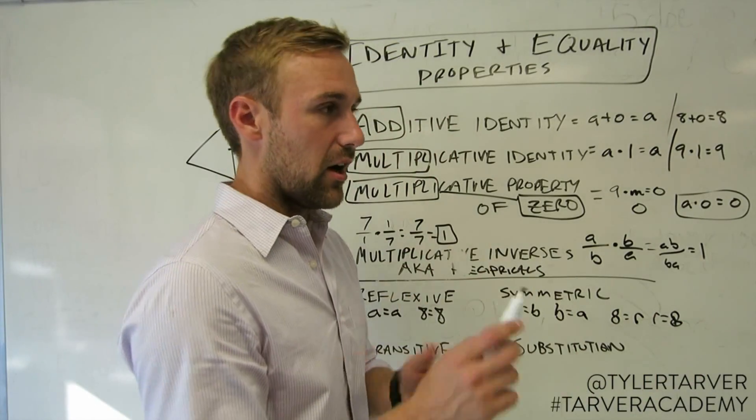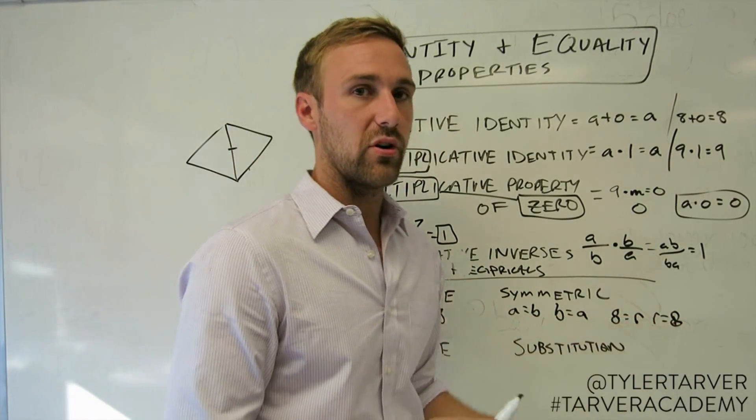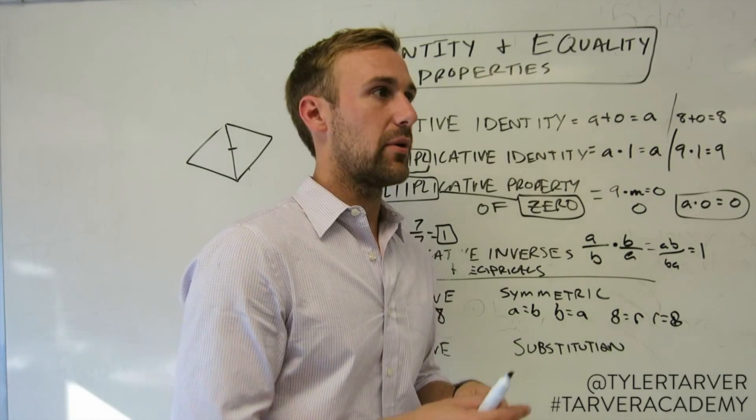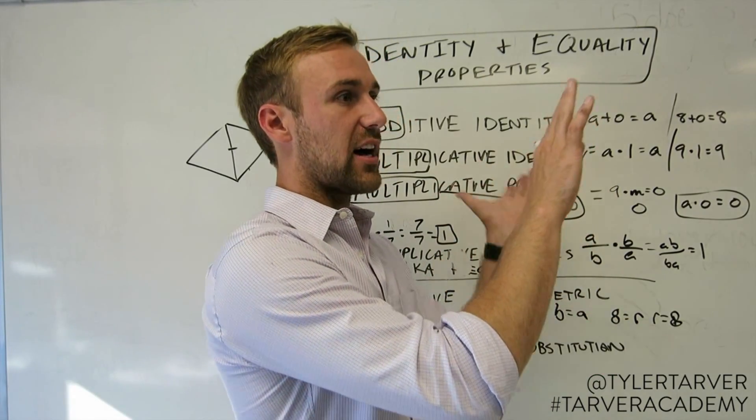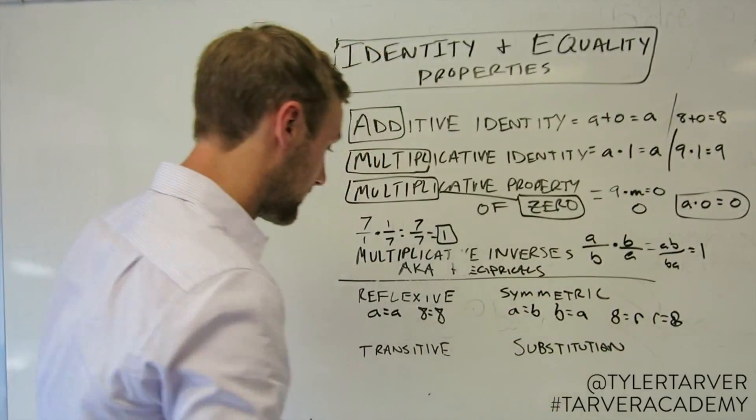That means you can flip it. Usually you only use that at the end of your proof whenever you want to look pretty. Whenever you want the things to look pretty at the end, you might just say, oh, I want my answer on this side. I'm allowed to flip it. That's what symmetric property is.